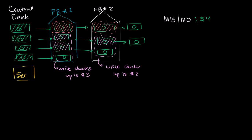That clearly isn't all of the stuff that can be used as money in this little universe. These people can also write checks, so we can have a slightly broader definition called M1. You could think of it as all the currency in people's pockets plus all the check-writing capabilities. That would be $2 of physical currency in wallets plus $5 of check-writing capability. Another way to view it: M0 plus checkable deposits.